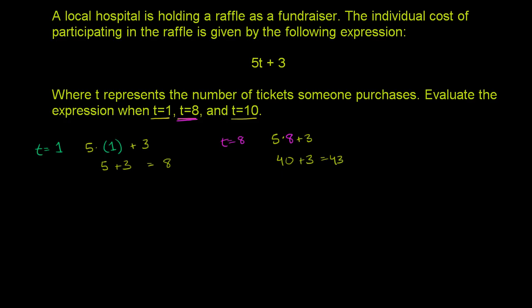And so we have the last situation with t is equal to 10. So we have 5 times 10. Instead of a t, we put a 10 there. 5 times 10 plus 3. 5 times 10 is 50, and then we're going to have to add 3 to that, and that is equal to 53. And we're done.